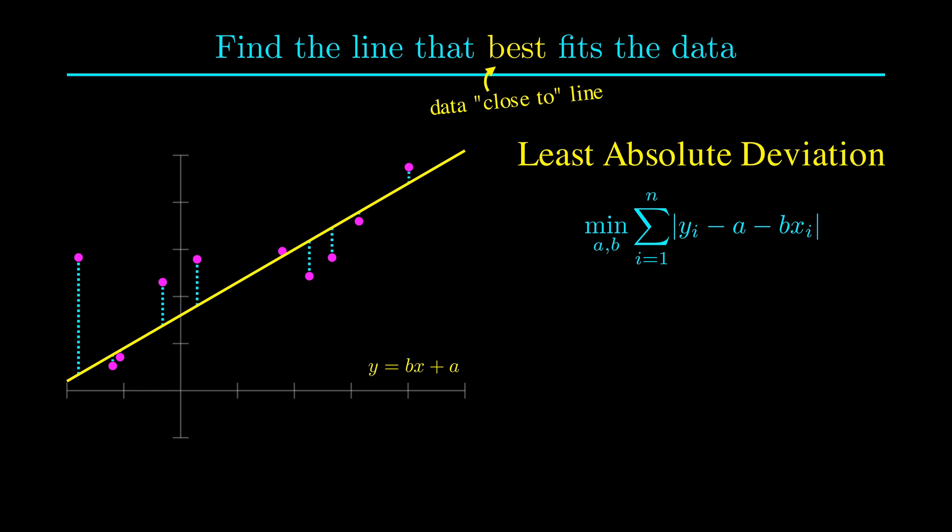However, the more popular objective is to minimize the sum of the squares of these errors. The reason we square these errors is because it makes the problem much easier to solve. The line we get from minimizing this objective is called the least squares line.